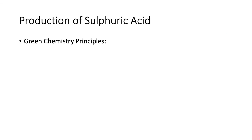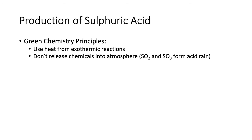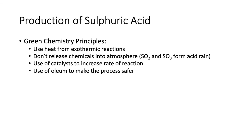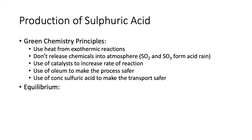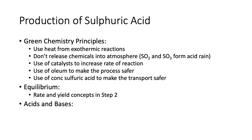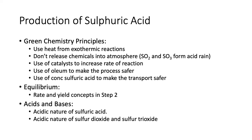Just to go through all the ideas for the production of sulfuric acid and how they link to older topics: using green chemistry principles — heat from exothermic reactions should be used to power stuff. Don't release chemicals like SO2 and SO3 into the atmosphere, because they will form acid rain. Use of catalysts to increase the rate of reaction. Use of oleum to make the process safer. Use of concentrated sulfuric acid to make transport safer. Equilibrium concepts apply at step two — remember steps one, three, and four are not equilibrium steps.